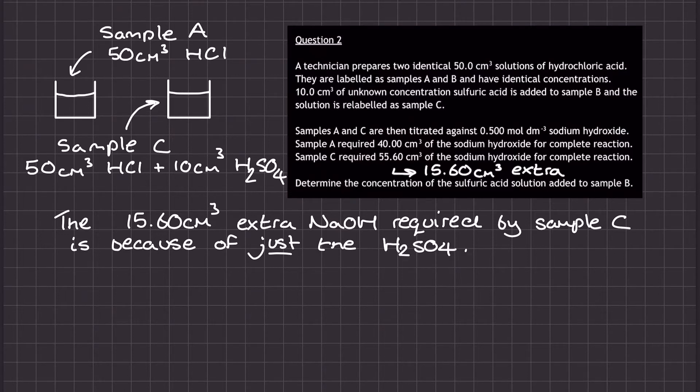As a result, the volume we're actually going to use for the sodium hydroxide in the calculation to determine the concentration of the sulfuric acid is just going to be this 15.60 centimeters cubed. So we're almost just honing in on the reaction between the sulfuric acid and the sodium hydroxide only by using the difference between the two volumes of sodium hydroxide required by the two different samples of solution.